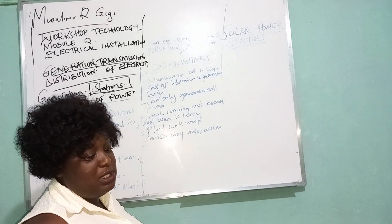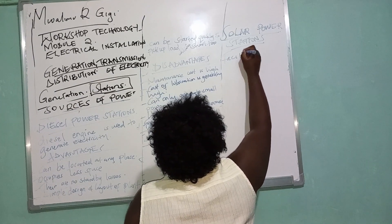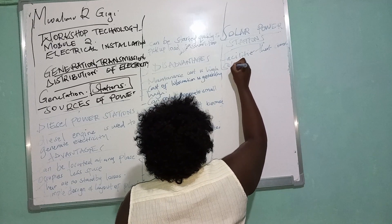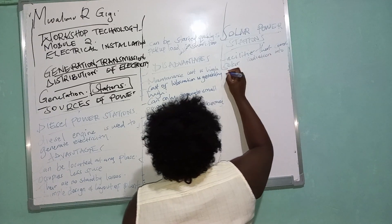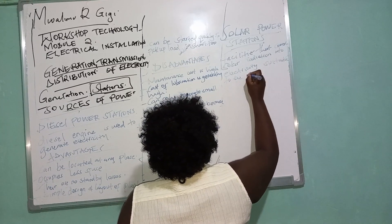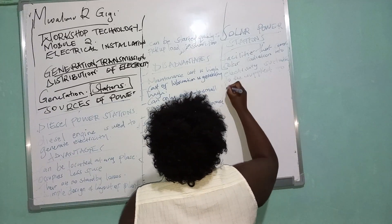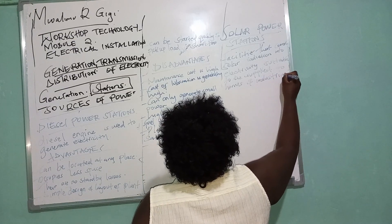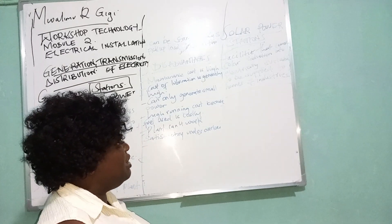These are facilities that convert solar radiation into electricity suitable to be supplied to homes and industries. So the facilities convert solar radiation into electricity suitable to be supplied to homes and industries.